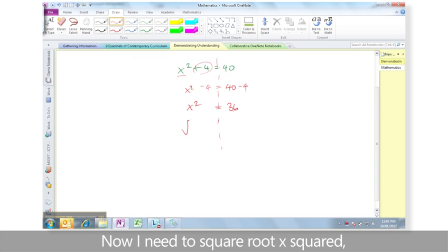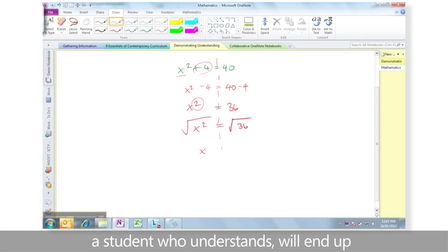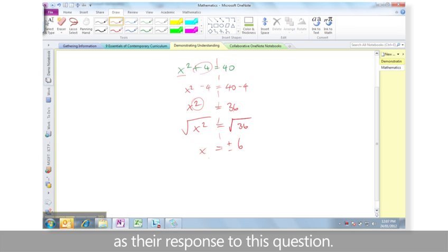Now I need to square root x squared because I need to get rid of the squared. And if I do that to one side, I need to do it to the other. So eventually, a student who understands will end up with x equals plus or minus 6 as their response to this question.